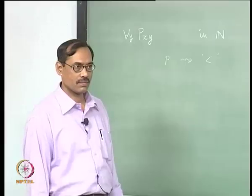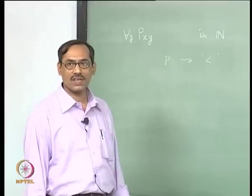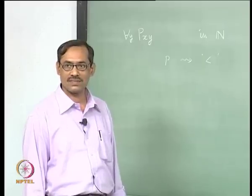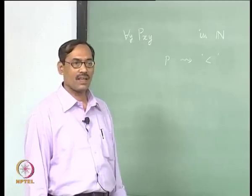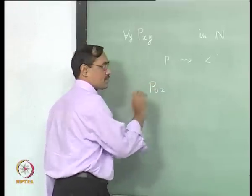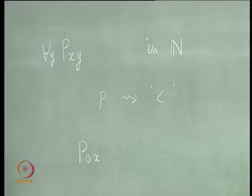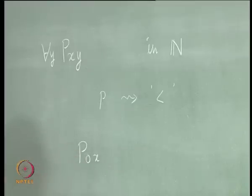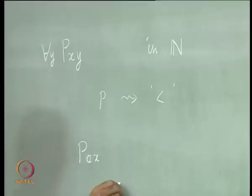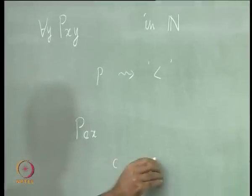Now, what about this x? Because this is not a sentence, we are not able to say whether the sentence is true or false in natural numbers. To make it simpler, let us take P(0, x). But 0 is not in the first-order language; we have to interpret it somehow. We cannot say P(0, x); we will say, for example, P(c, x).